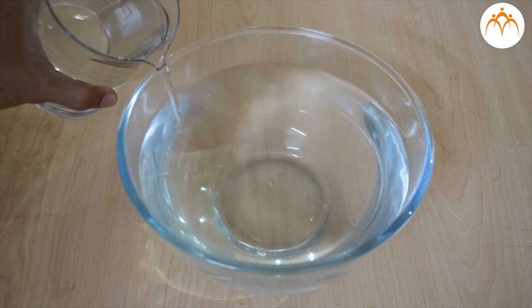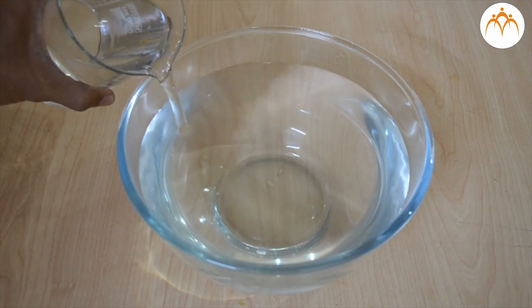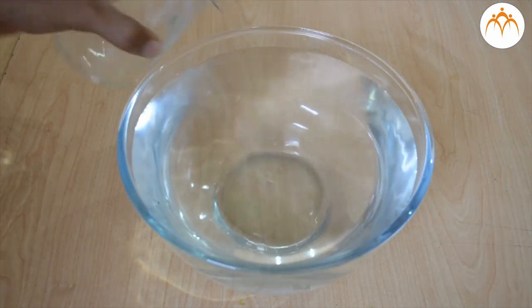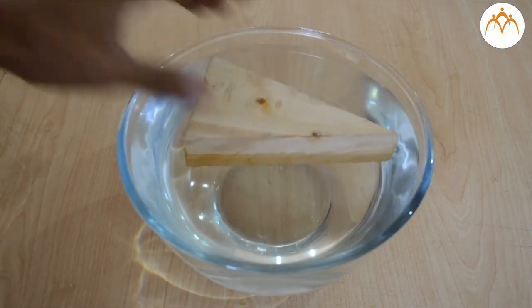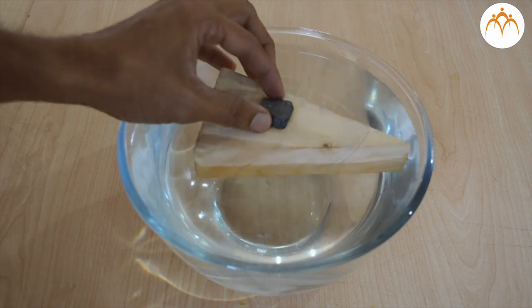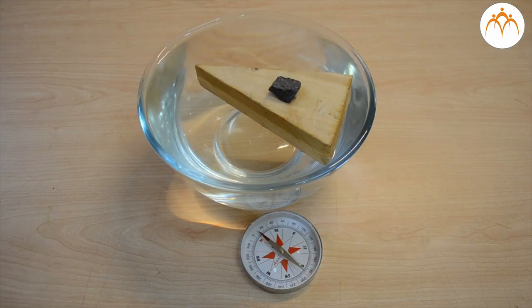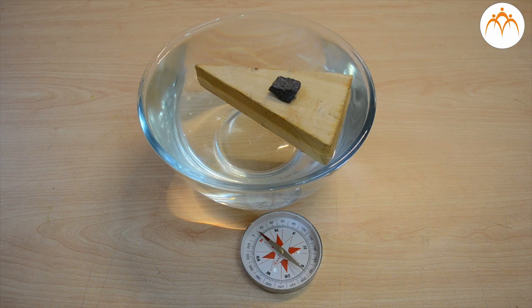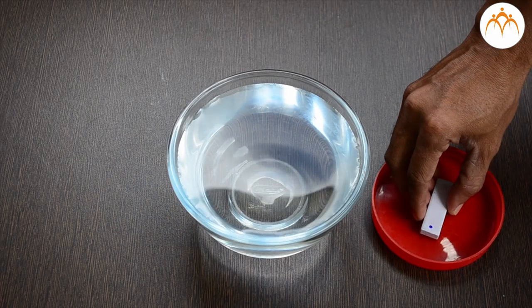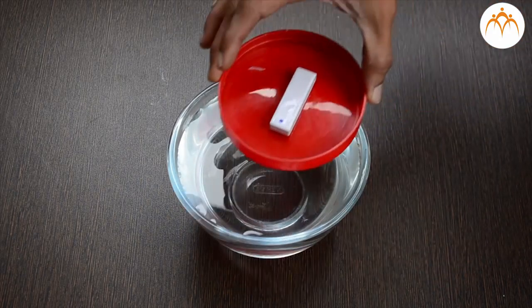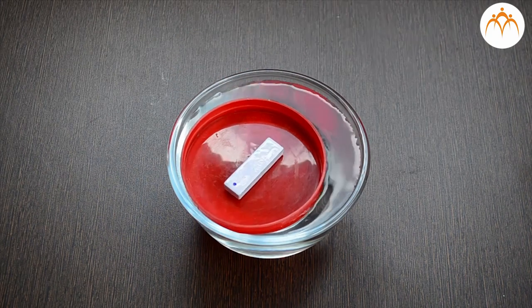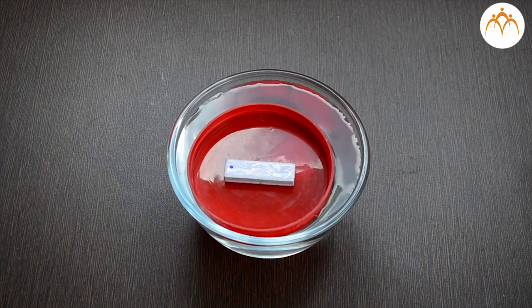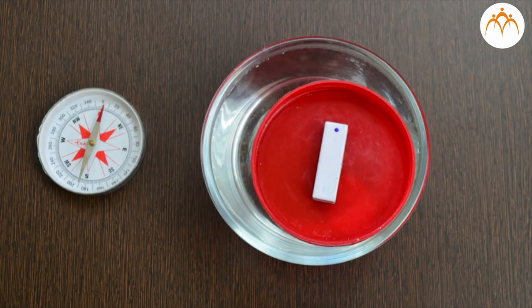Instead of hanging it by a thread, they used to keep it on the wood and float the wood in water kept in the container. Let us keep this piece of magnetite on the wooden block and float it in the water. It aligns itself in north-south direction. Let us float our bar magnet as well to see if it also settles in north-south direction. Yes, it did.